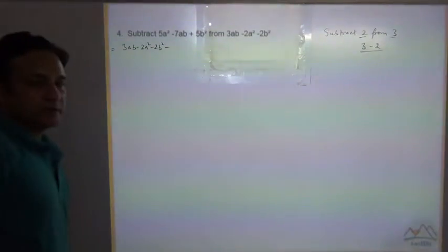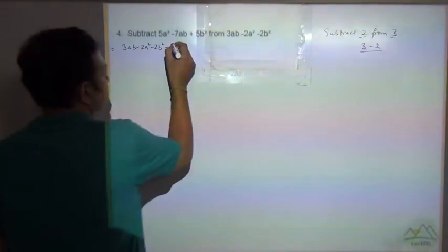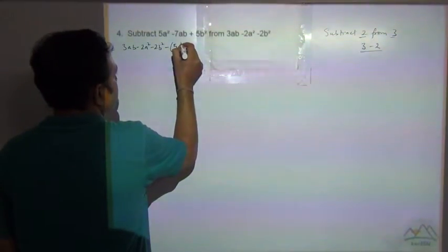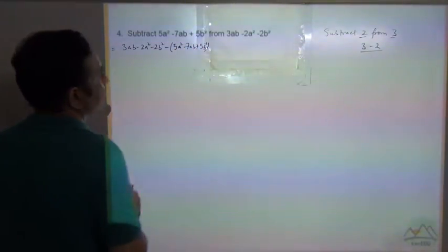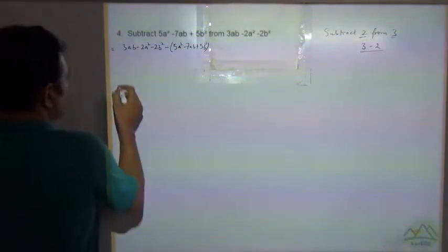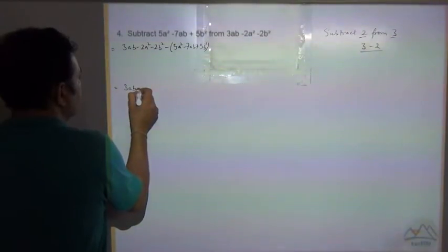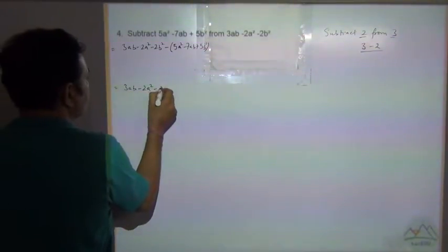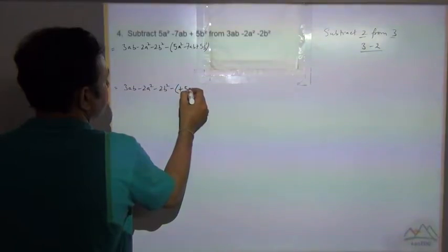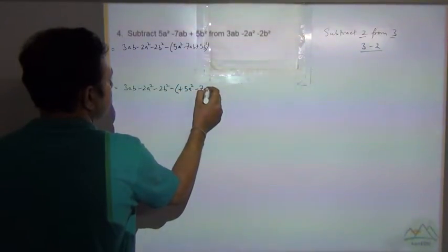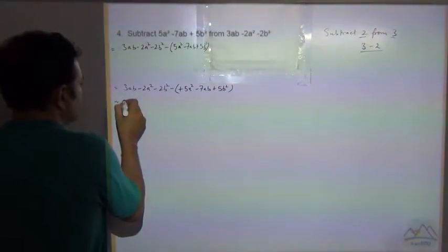Just like that, we put the expression in brackets: 3ab minus 2a² minus 2b² minus (5a² minus 7ab plus 5b²). Now let's expand this. This is equal to 3ab minus 2a² minus 2b², and then we open the bracket with the minus sign outside.